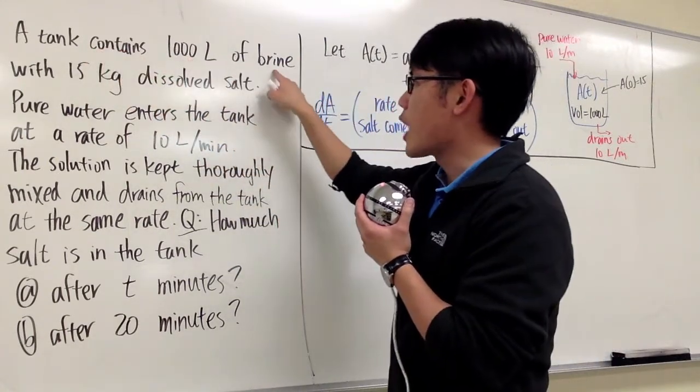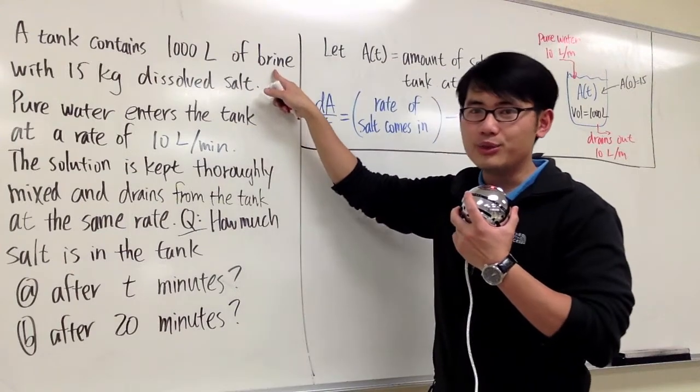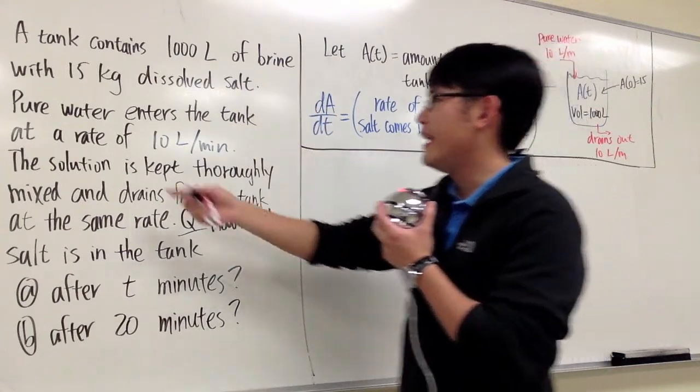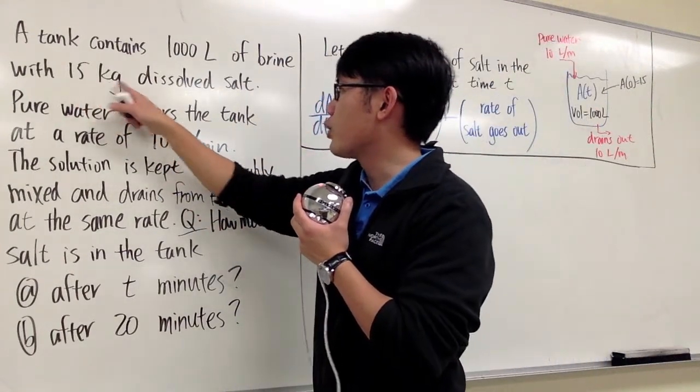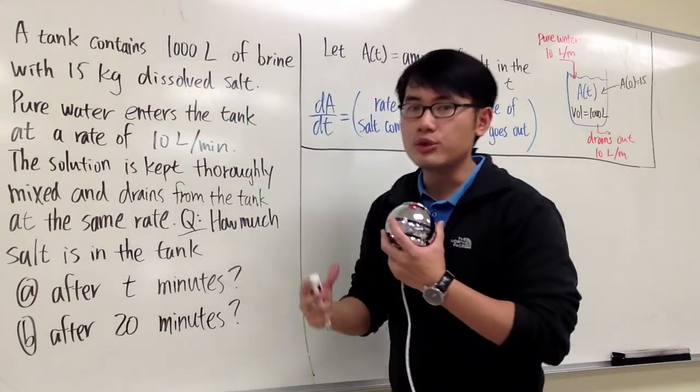It says the tank contains 1000 liters of brine, and brine means that we have salt solutions or salt water. And initially, we have 15 kilograms of dissolved salt in the solutions already.